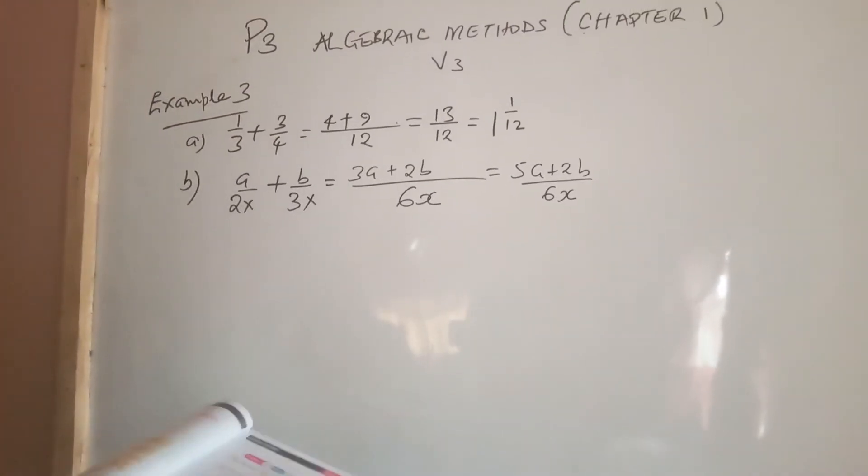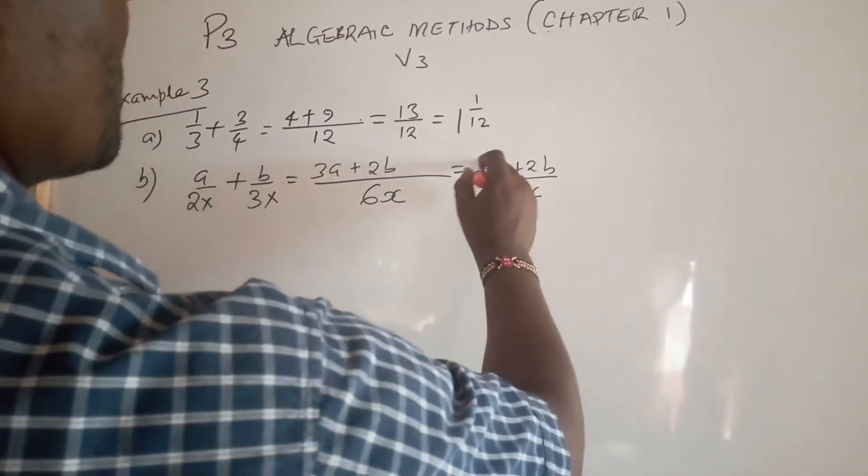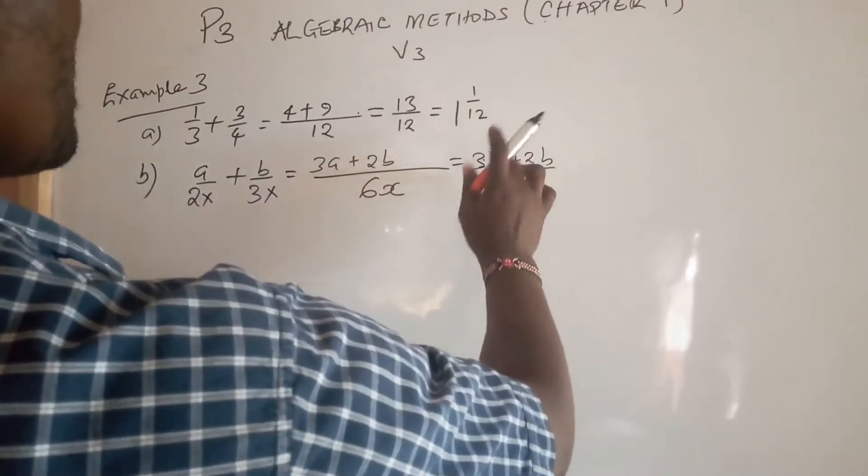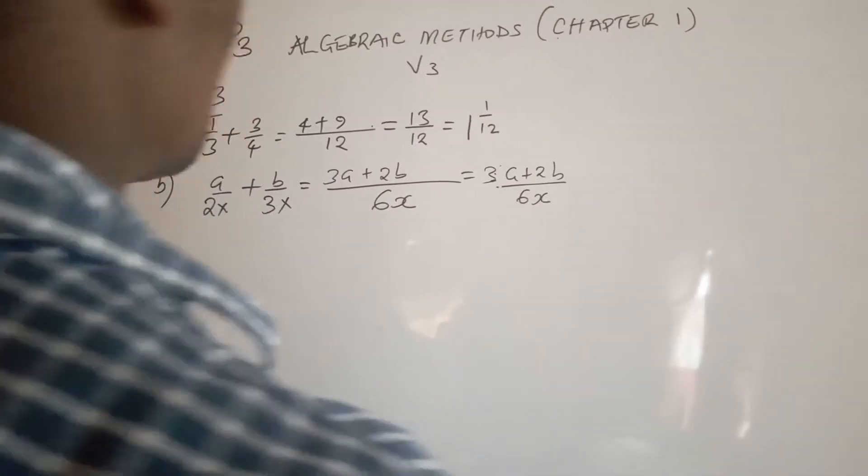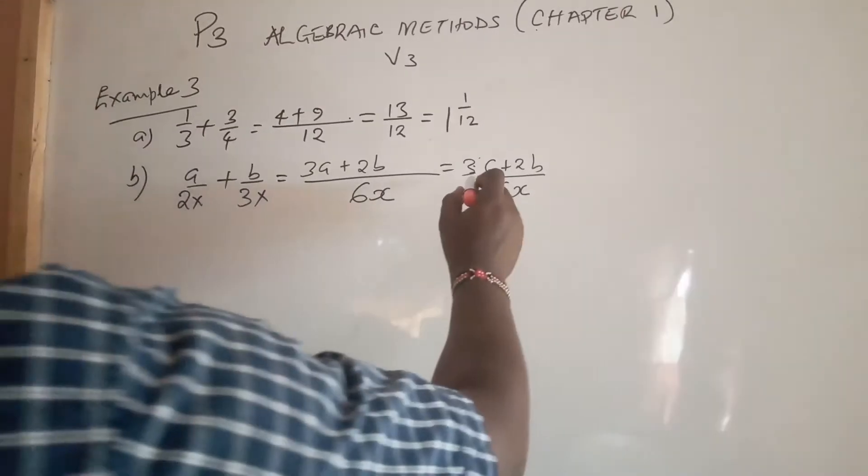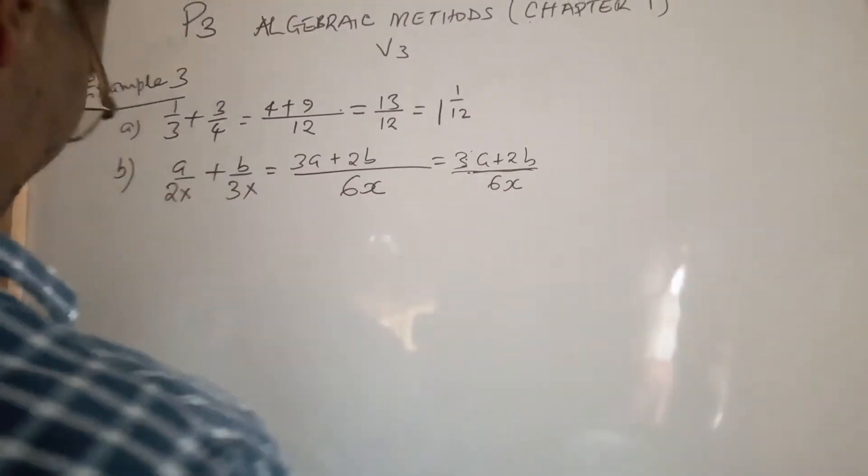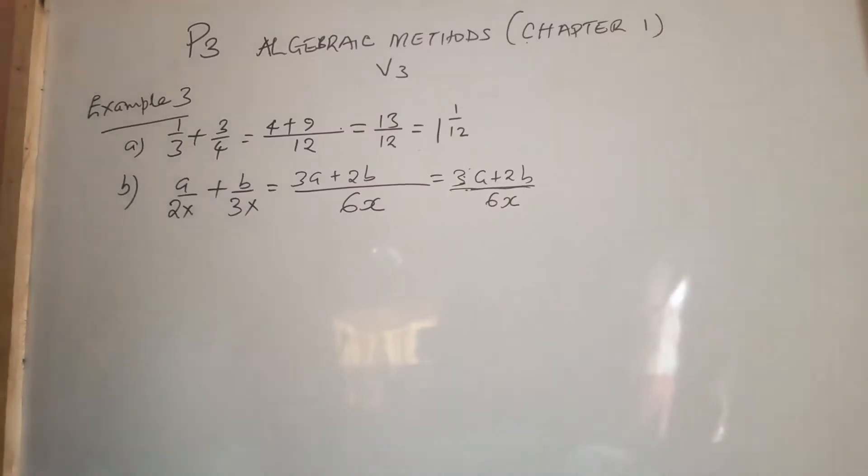We're going to have 3a plus 2b over 6x. There is nothing common and nothing to collect.